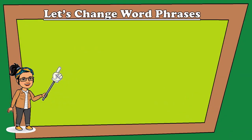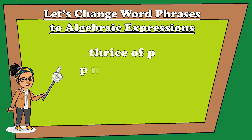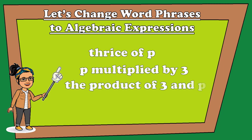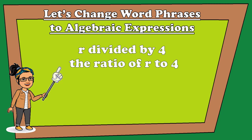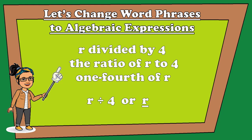'Thrice of P', 'P multiplied by 3', or 'the product of 3 and P' gives us 3 times P, or simply 3P. 'R divided by 4', 'the ratio of R to 4', or 'one-fourth of R' gives us R divided by 4, or R over 4.